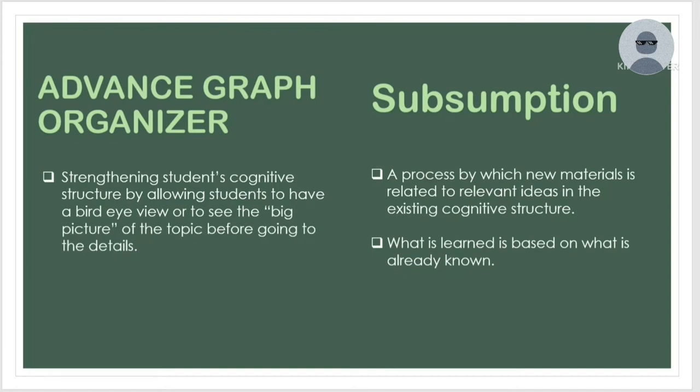Subsumption is a process by which new material is related to relevant ideas in the existing cognitive structure. It means you will combine your existing or old knowledge with new knowledge. A learner absorbs new information by tying it to existing concepts and ideas already acquired, rather than building an entirely new cognitive structure. They are able to relate it to information already present within their minds — or, as we say, what is learned is based on what is already known.